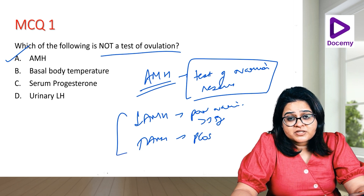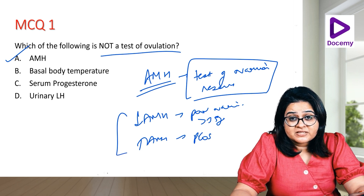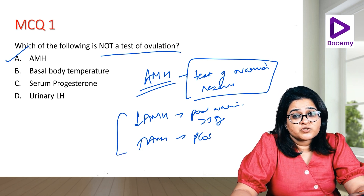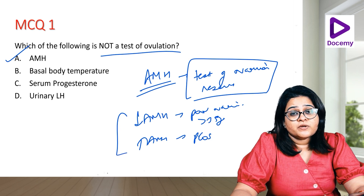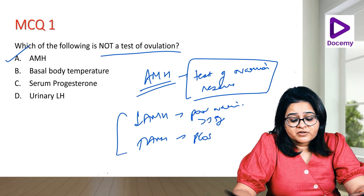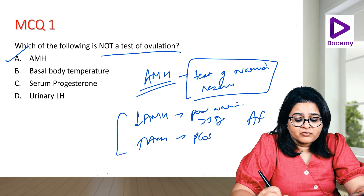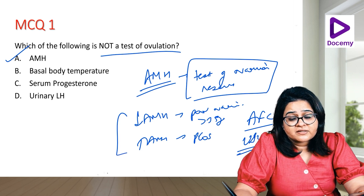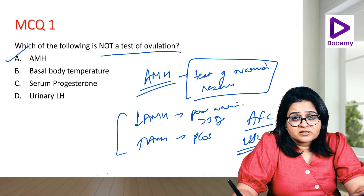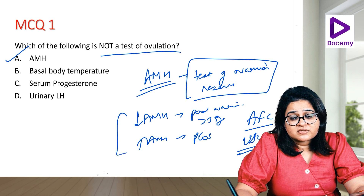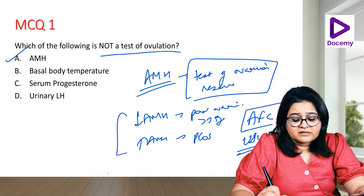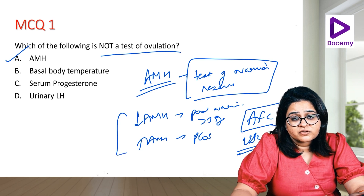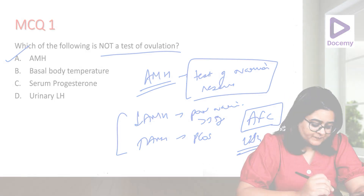We can also check ovarian reserve by the patient's age — a young woman should have a good ovarian reserve. Additionally, we can check ovarian reserve by doing an antral follicle count on ultrasound, where we count the number of follicles seen on both sides of the ovaries to determine how good the ovarian reserve is.